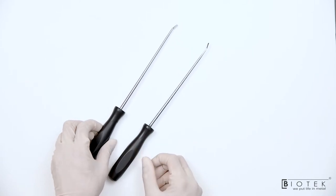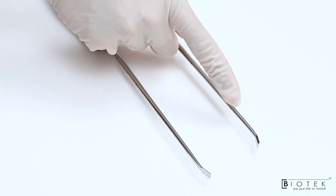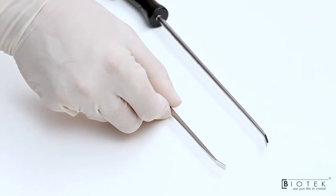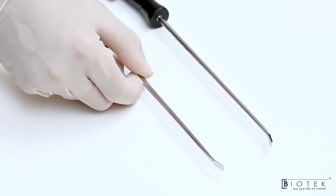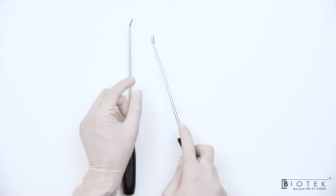These are Tissue Elevators. This is Downward and this is Upward Elevator. It is used to elevate the soft tissue off the bone for better mobilization.